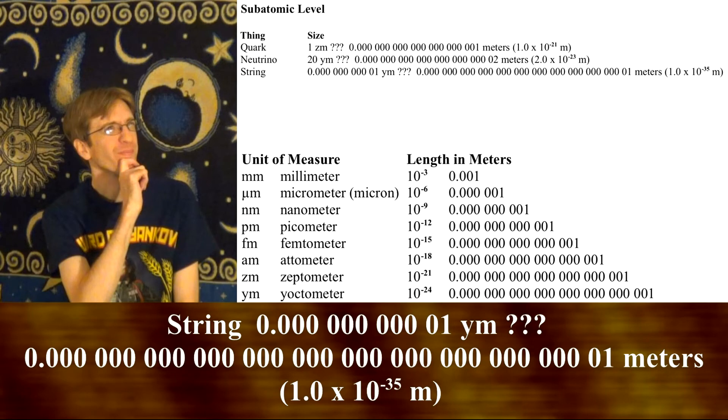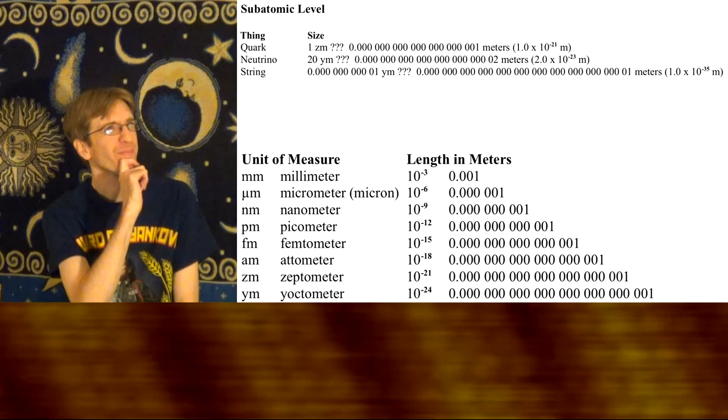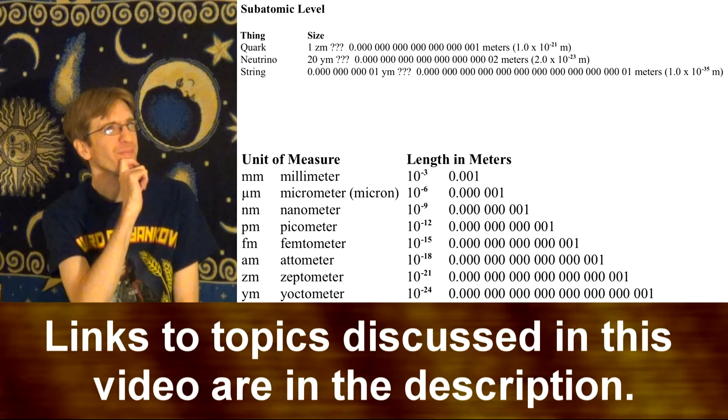According to string theory, a single string is the size of a Planck length, which, according to current physics, is the smallest possible unit of measure at 0.0000000000001 yoctometers in size. So, in theory, nothing can be smaller than that.